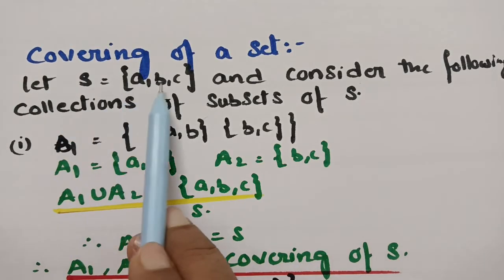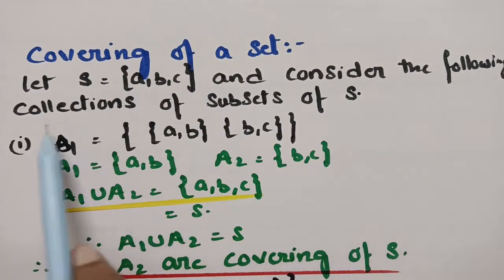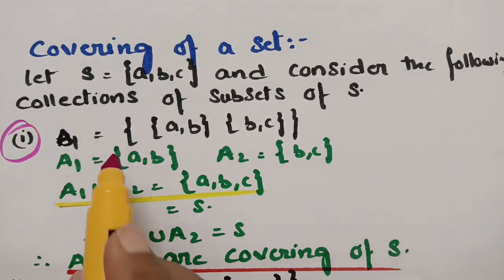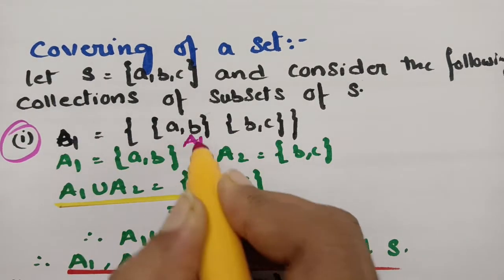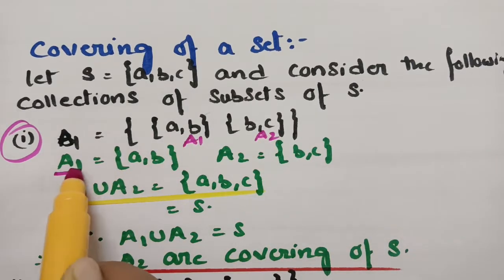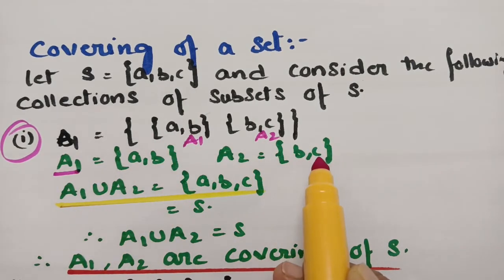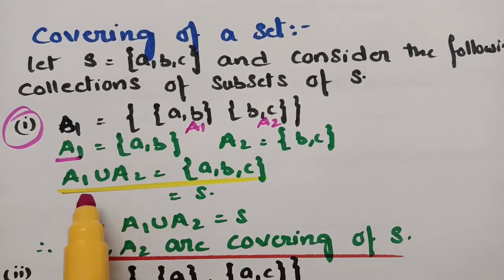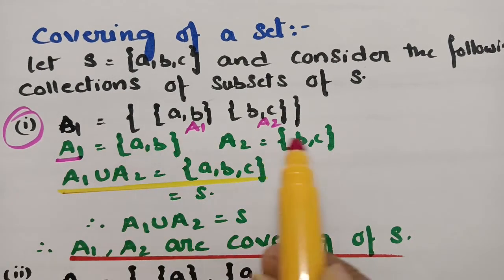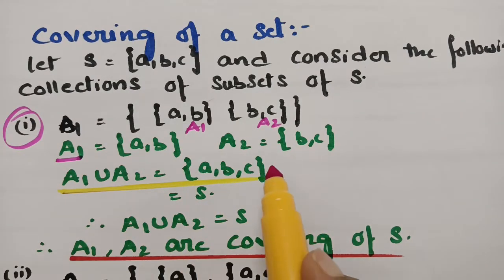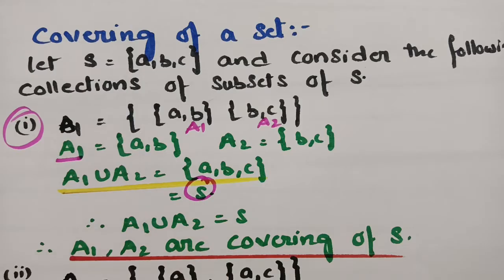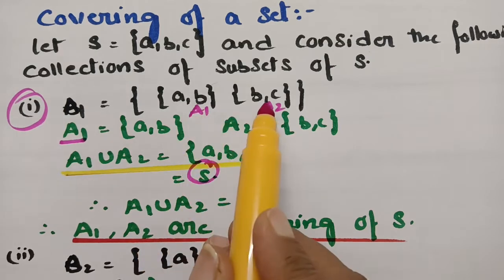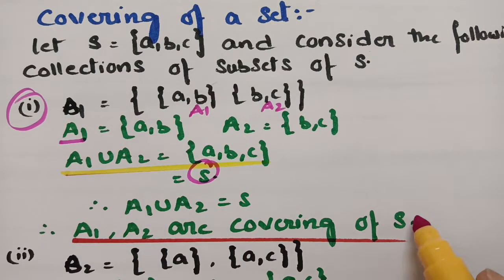Let S equal {A, B, C} — this is the main set. Consider the following subsets. For the collection B1, take A1 = {A, B} and A2 = {B, C}. There is a common element B between them — but no issue for covering since common elements are allowed. The union of A1 and A2 gives {A, B, C}, which is exactly the main set S. Therefore A1 and A2 are the coverings of S.